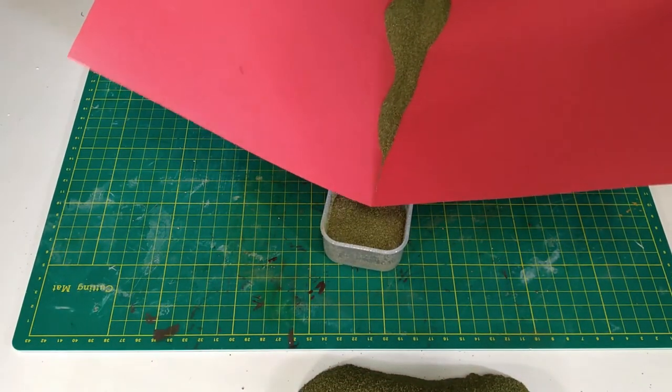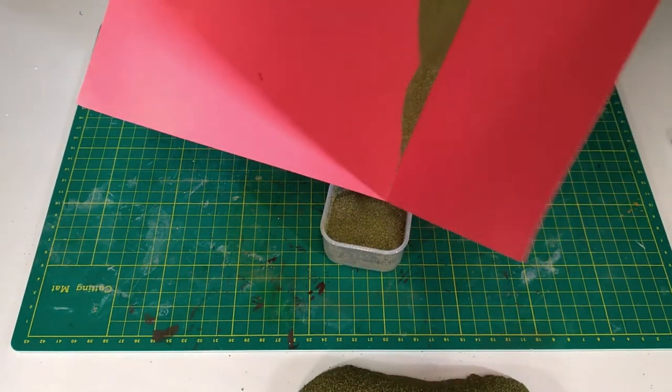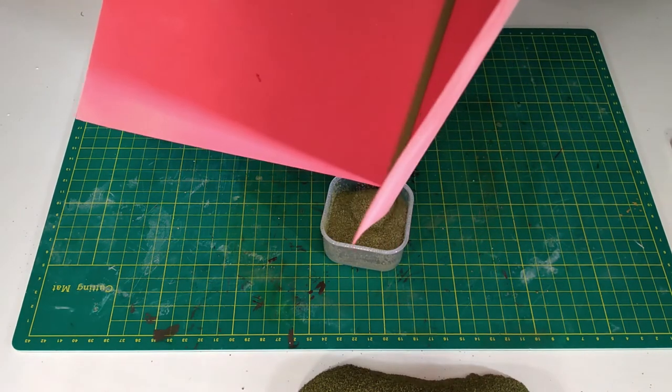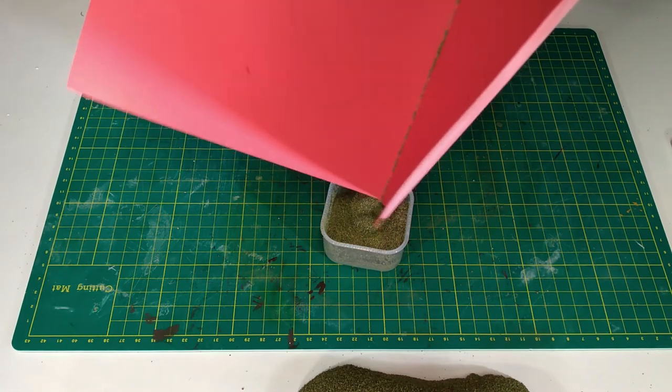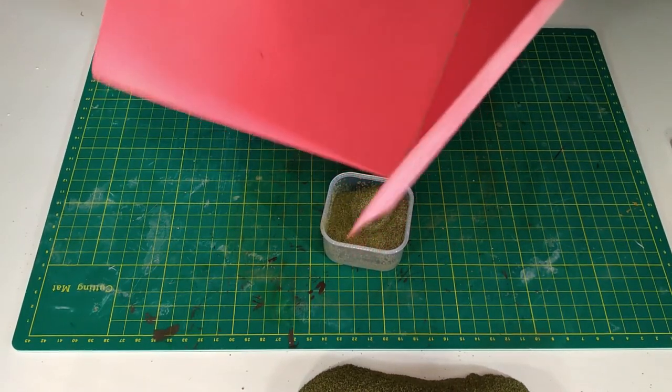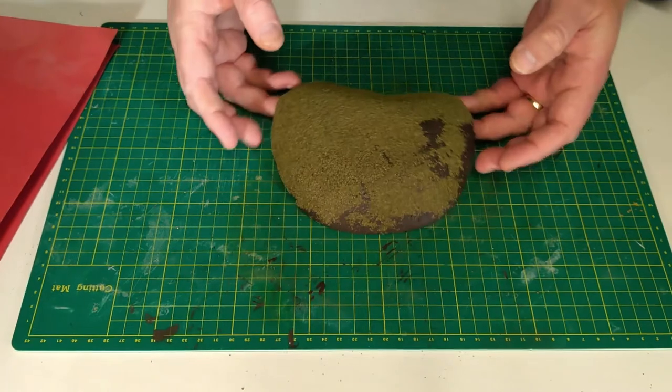Handy cleanup tip. With your container close at hand, tip all the excess flock into the middle of your paper. Having the fold down the center really does make it easier. Then carefully pour all the remaining grass back into your container. No fuss, no mess.